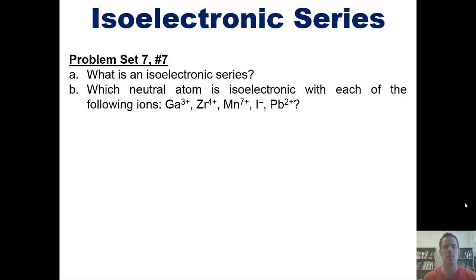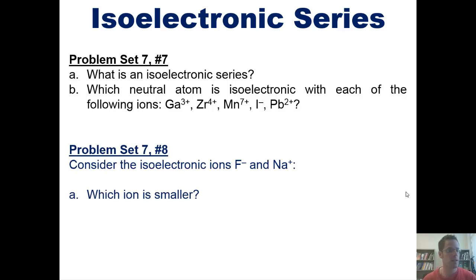That takes us to a problem from the problem sets that I ask my students in class. First, what is an isoelectronic series? I think I just defined that in the previous slide. And which neutral atom is isoelectronic with each of the following ions? Next, consider the isoelectronic ions fluoride and sodium cation. Which ion is smaller? Now, I encourage you to try and answer these questions on your own first. If you'd like, I'll post a link here to a separate video in which I answer them on the board.